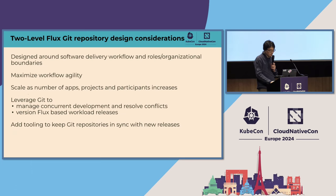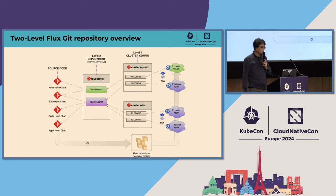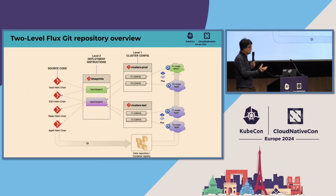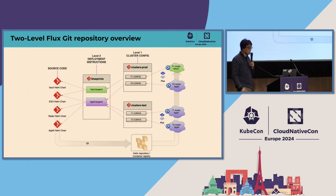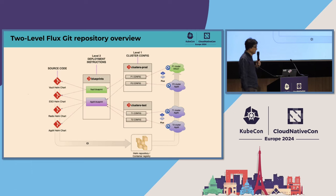The way we organize Git repositories is a two-level model. On the left side you see all the source code of your applications — that's where 99% of your code resides. In our case, we have one Git repo per application or per Helm chart, and there you see a mix of open source Helm charts and internally developed Helm charts. We have a CI system that builds each Helm chart. Every time somebody commits something, the CI kicks in, builds the Helm charts and container images, and pushes them to a container registry and Helm repository.